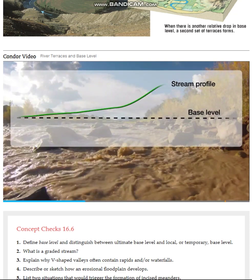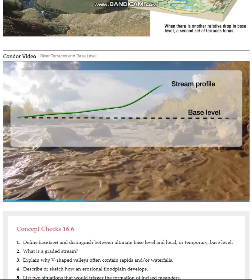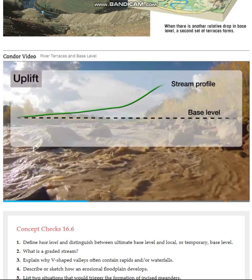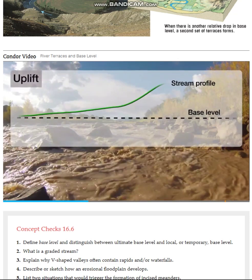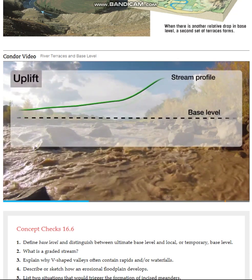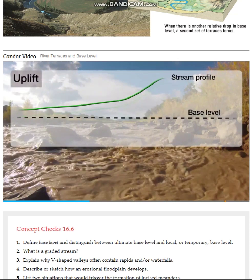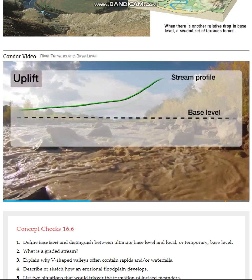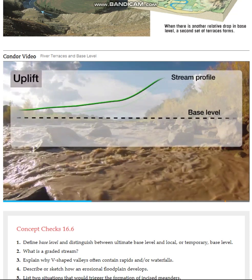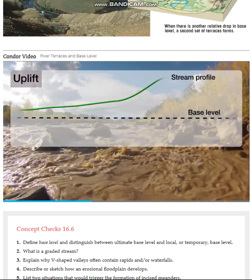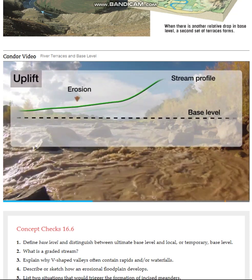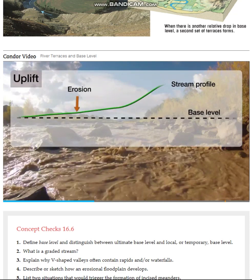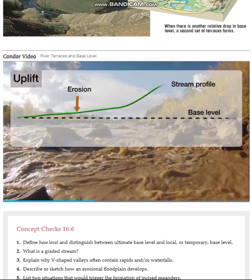This separation of the stream and the base level can happen in two ways. The first is through an uplift of the land surface by tectonic activity. When the land is uplifted, the river is raised above its base level and so downward erosion occurs until the stream returns to the base level.